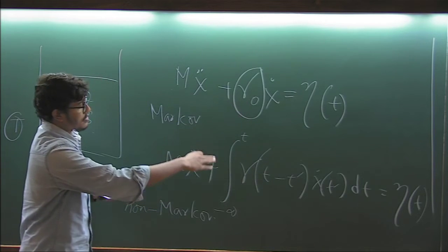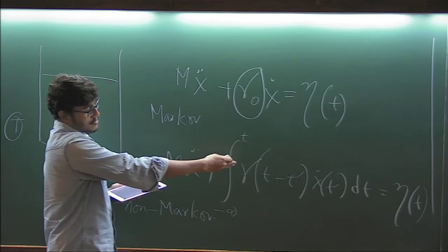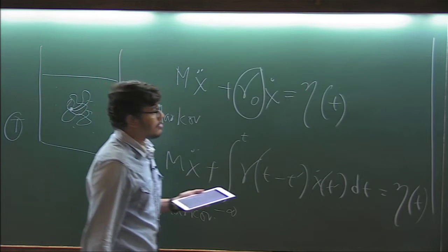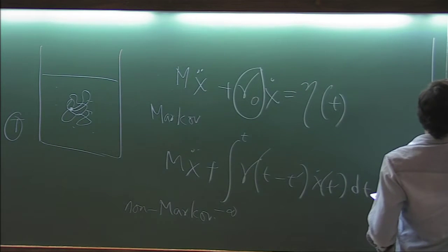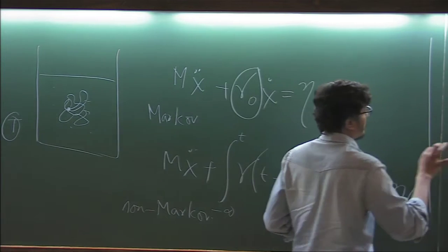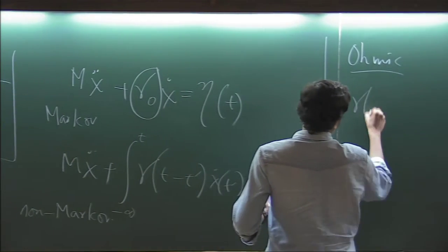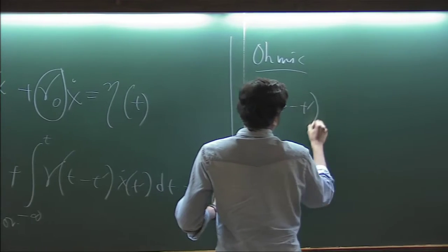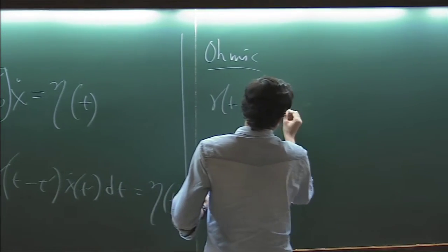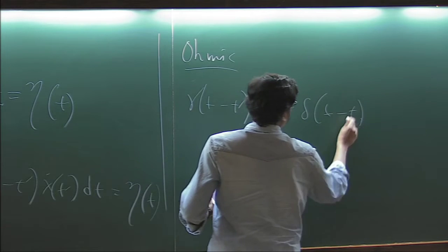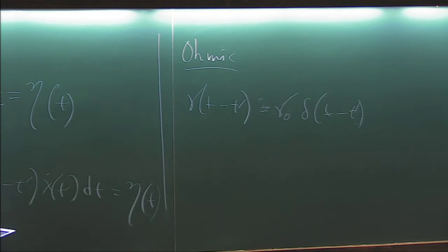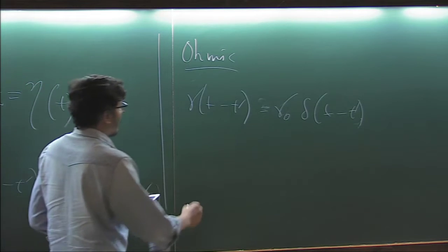Because we have to solve this equation, right? And so if I give this equation, this is like an integral equation, it's hard to solve. So this is called Ohmic. Ohmic is where there is no memory. So that means your gamma is basically gamma zero delta t minus t prime. So if you put this into this equation, you'll basically get this equation because of the delta function.